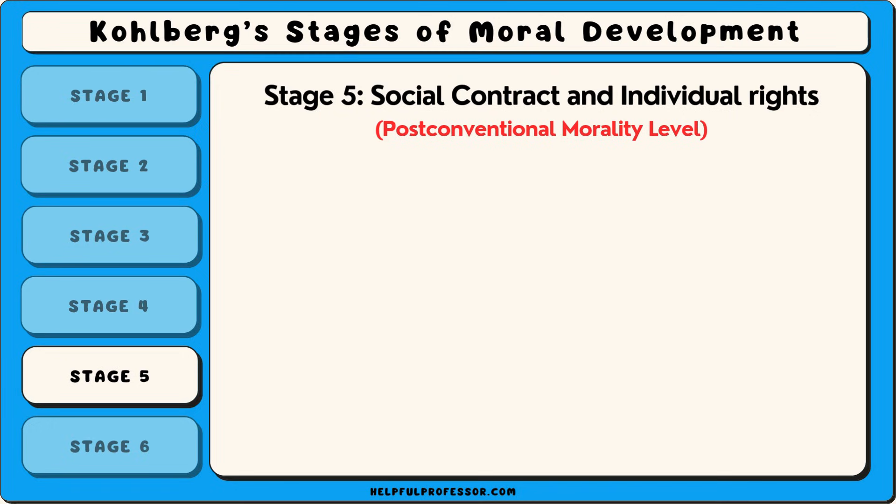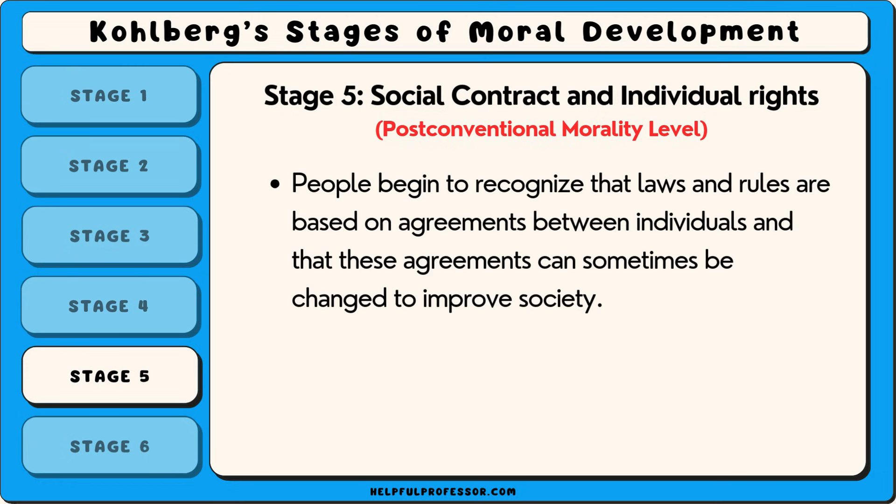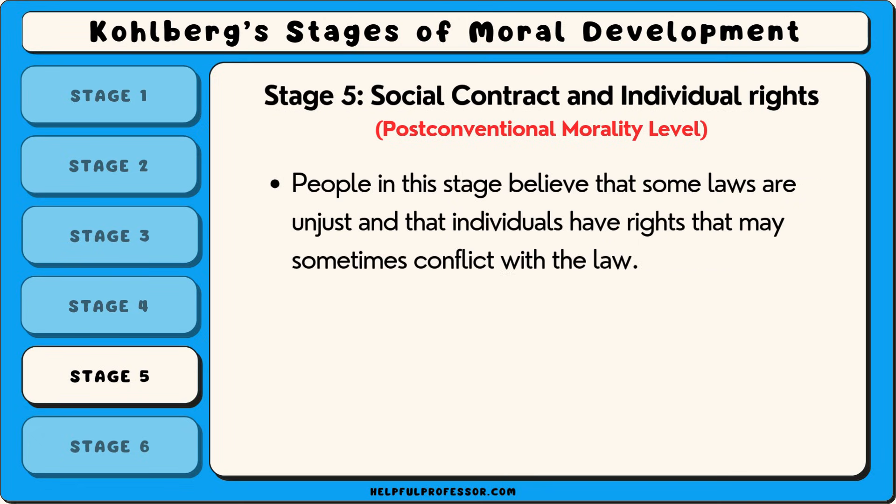The fifth stage, part of the post-conventional level, is called social contract and individual rights. At this stage, people begin to recognise that laws and rules are based on agreements between individuals and that these agreements can sometimes be changed to improve society. People in this stage believe that some laws are unjust and that individuals have rights that may sometimes conflict with the law.